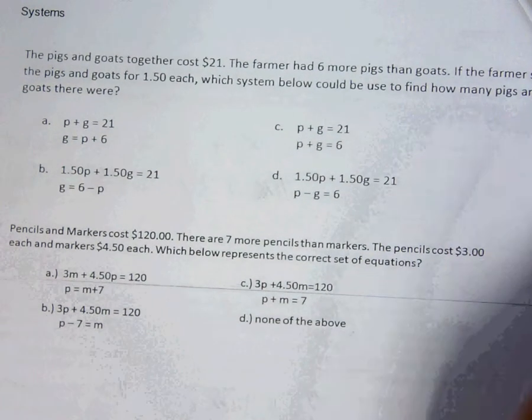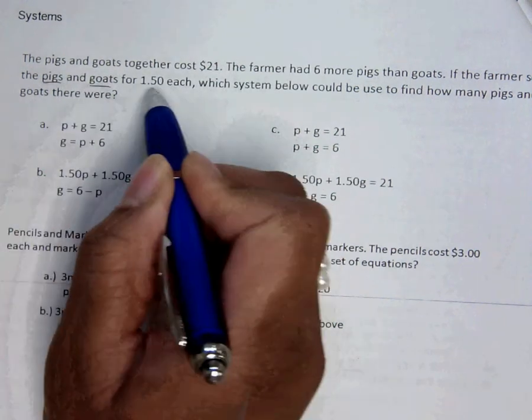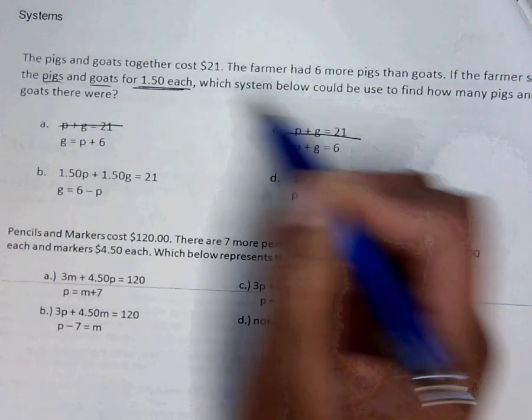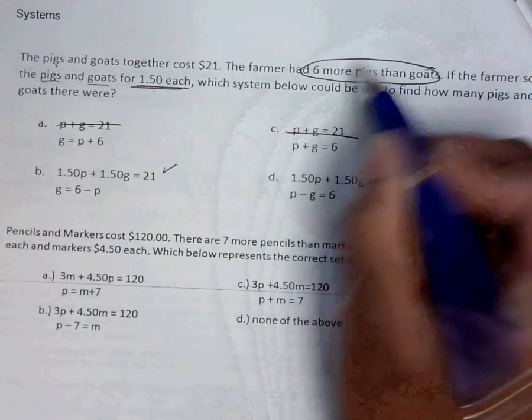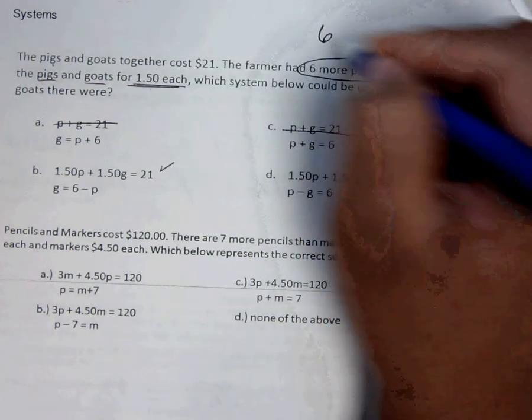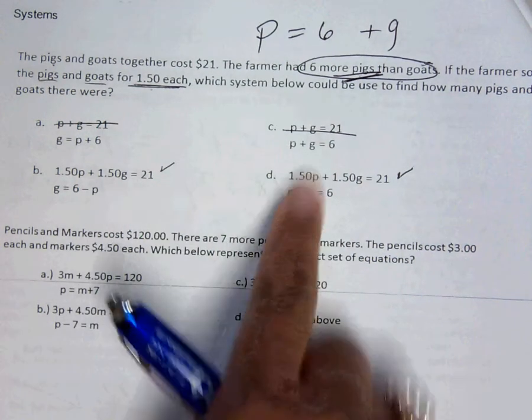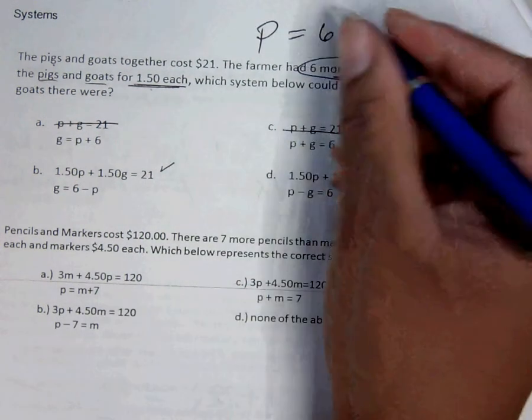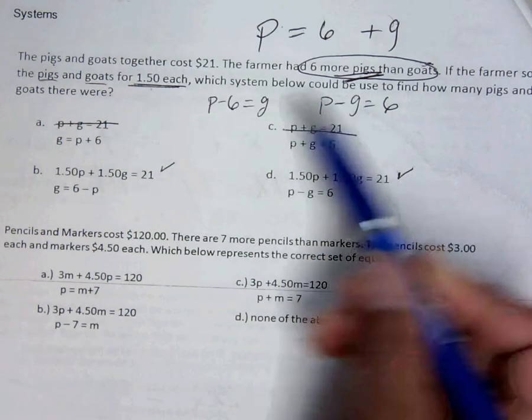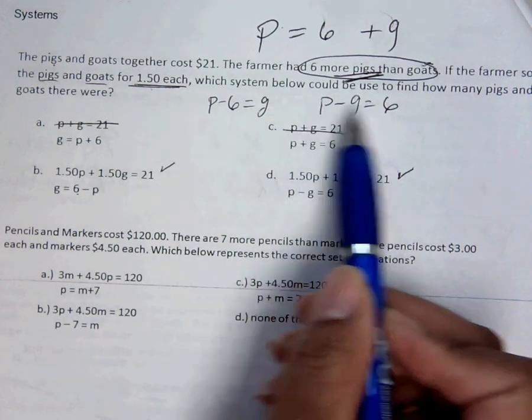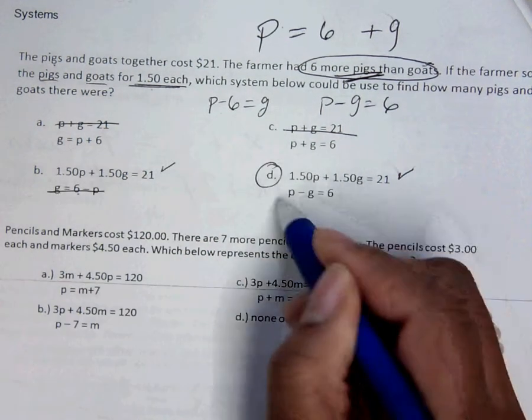The pigs and goats together cost $21, so P plus G does equal 21. But it says right here that the pigs and goats are 150 each. I can eliminate A and C. It has to say 150 for pigs and 150 for goats. So either B or D. Well this sentence right here says that 6 more pigs than goats. That 6 plus goats is going to equal what's more of the pigs. Now I don't see either one of those there, so they changed this with a minus sign. That means you can move the 6 over and do P minus 6 is G, or move the G over and do P minus G is 6. And this one says that the P is negative. So the answer has to be D.